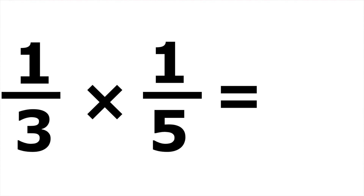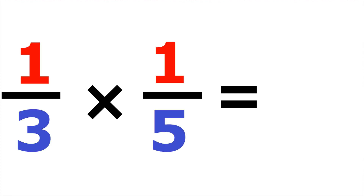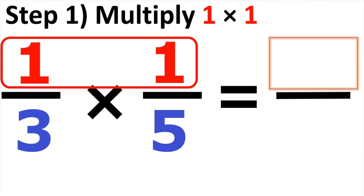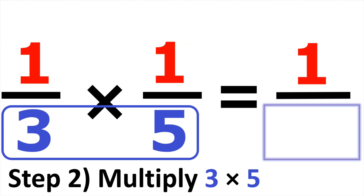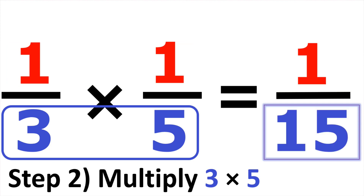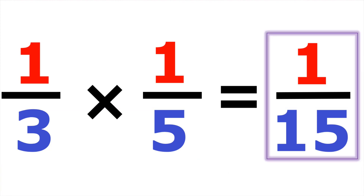In our very first example, we have one-third times one-fifth. The only rule for multiplying fractions is you multiply straight across. We're going to have the numerators in red and the denominators in blue. So step one, we multiply the two numerators — they're both one, so one times one gives us one. Then the denominator: three times five gives us fifteen. The answer is one over fifteen.